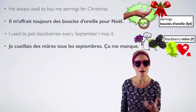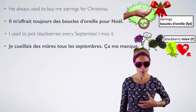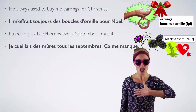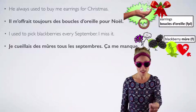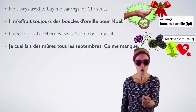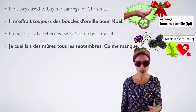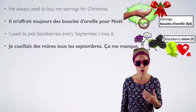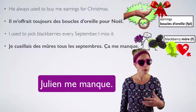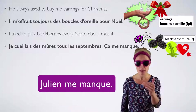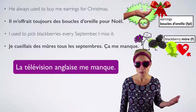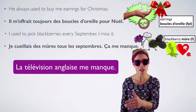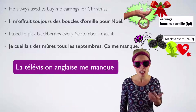Ça me manque. When we use the verb 'manquer' to mean 'to miss something,' in French you have to phrase it the opposite way — you have to say the thing you're missing first. It is missing to me: Ça me manque. 'I miss you' — in French you say 'you are missing to me': Tu me manques. 'I miss Julien' — Julien is missing to me: Julien me manque. English TV — I miss it — English TV is missing to me: La télévision anglaise me manque.